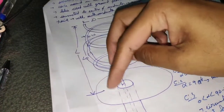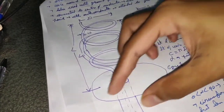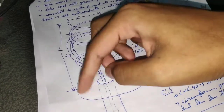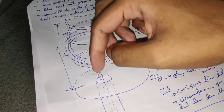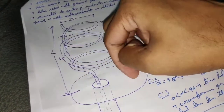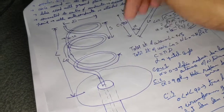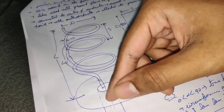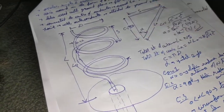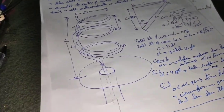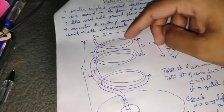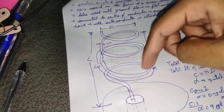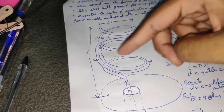The outer conductor of the coaxial line is attached to the ground plane, while the inner part of the conductor is attached to the feed point. Now let's look at the diagram of the helix.